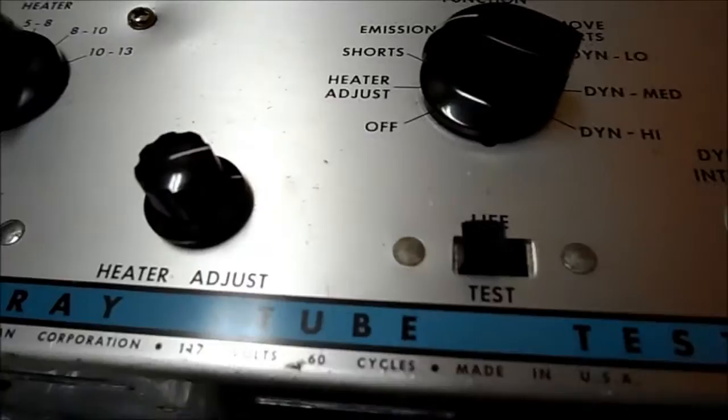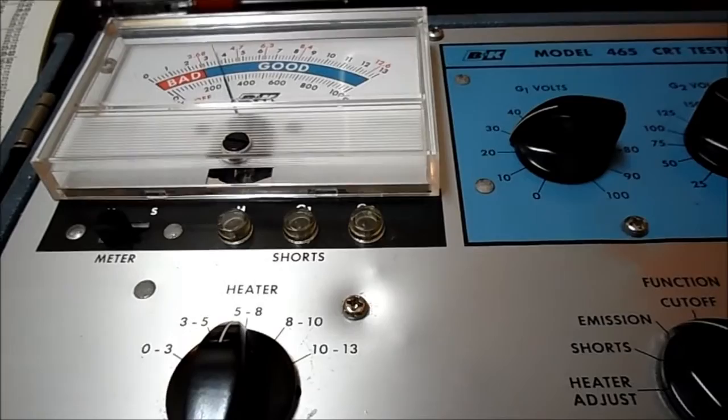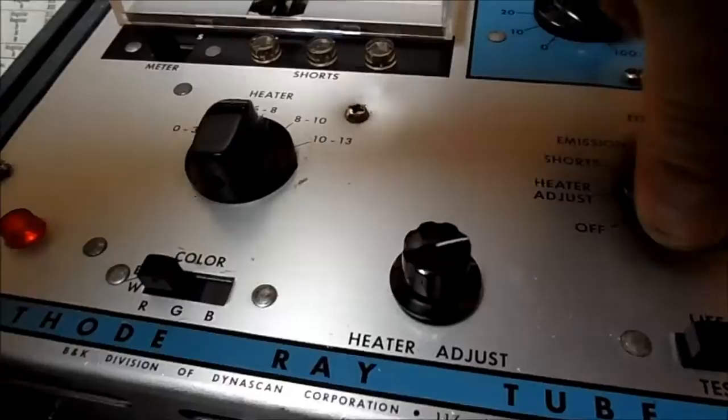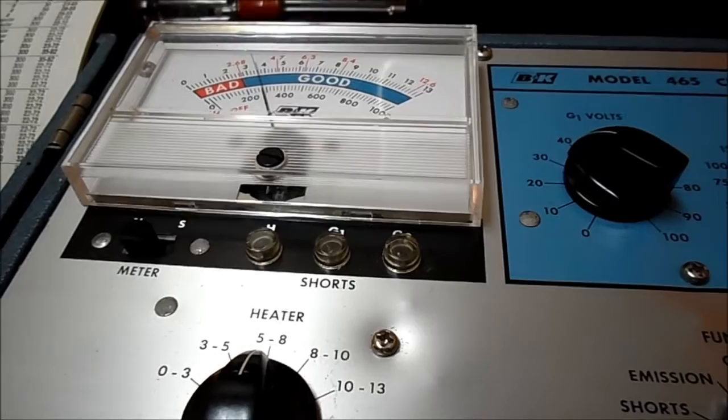Okay, tube is lit. Give it a few minutes to warm up. Shorts are okay. Emissions in the good, not stellar but it's in good. Set cutoff. All right, you're back to emission. It's not bad, it produces a viewable picture. So there you have it.